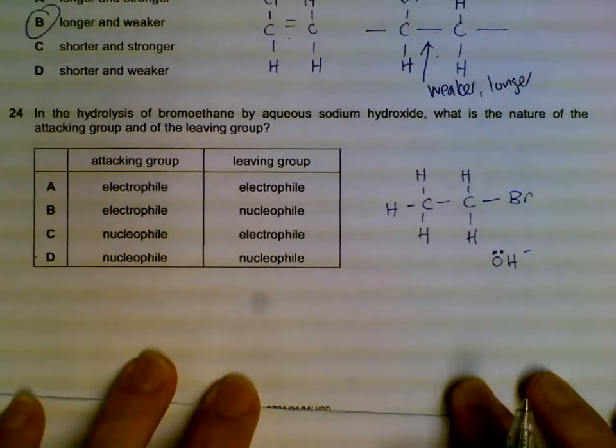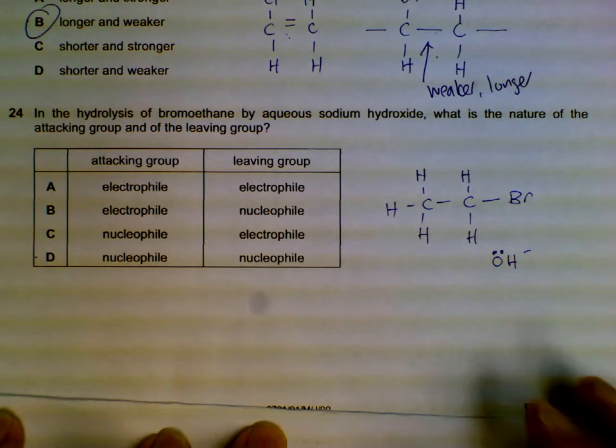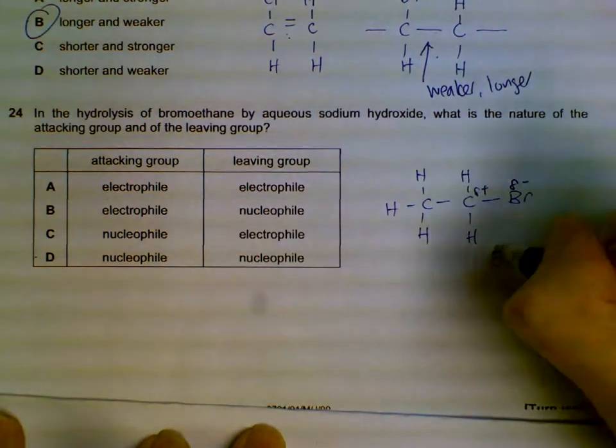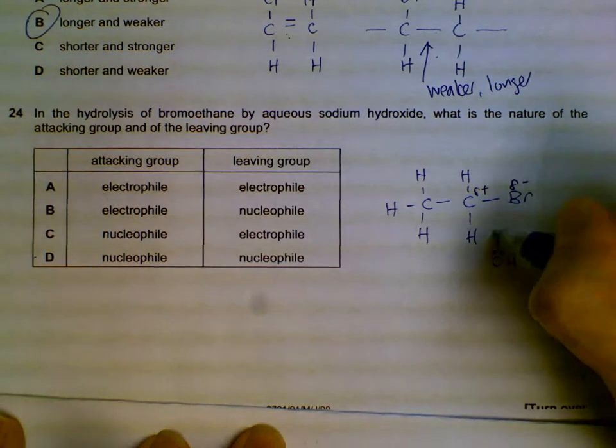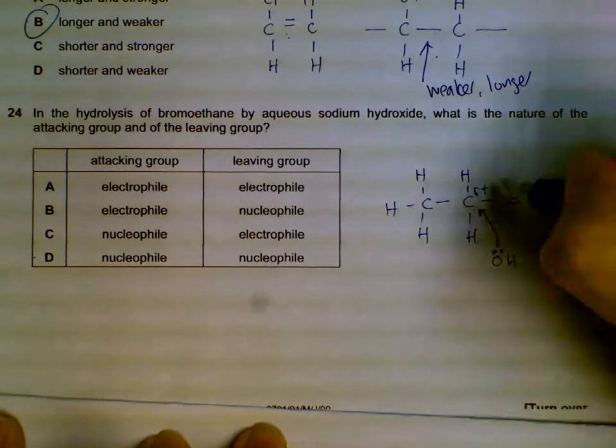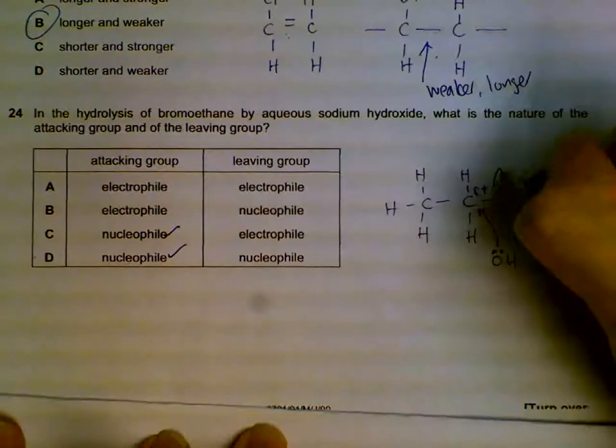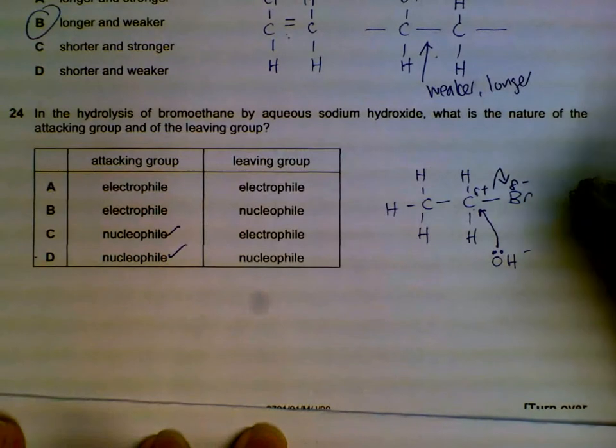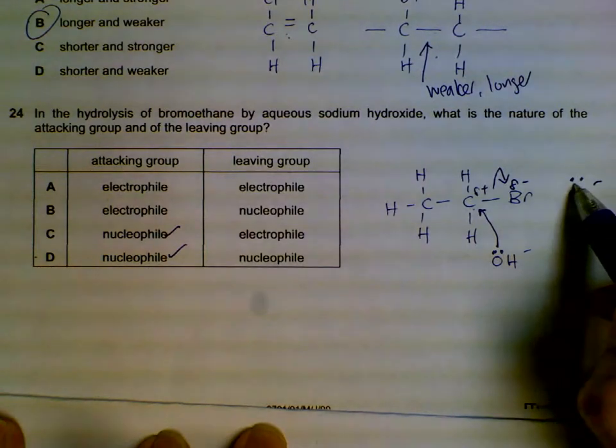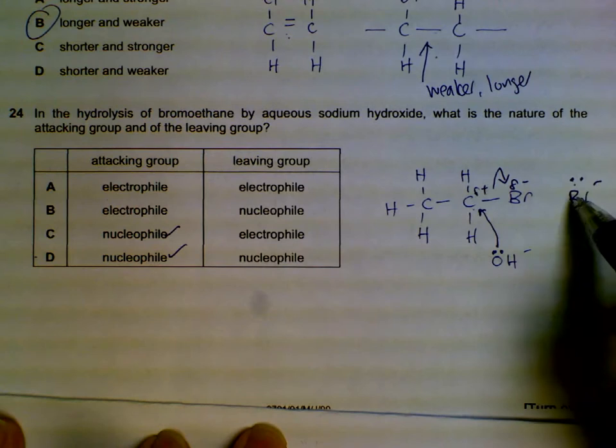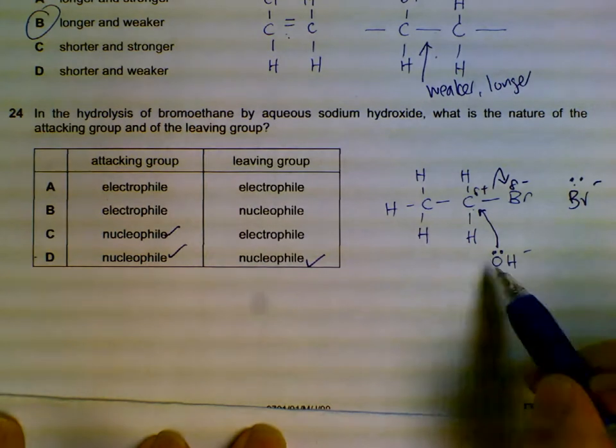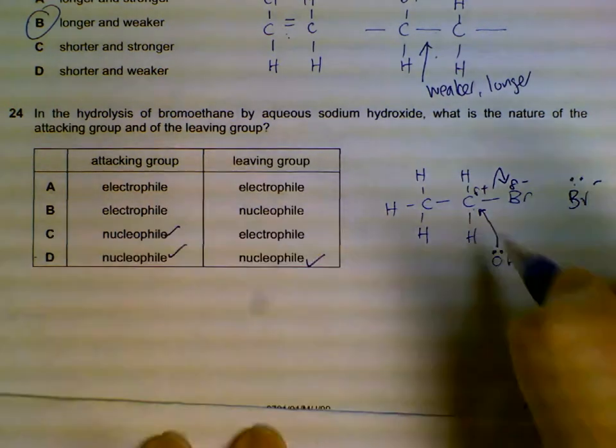Question 24: In the hydrolysis of bromoethane, what is the nature of the attacking group and leaving group? The attacking group has a lone pair - this is a nucleophile, it likes regions where they are positive. The leaving group will be Br- ion, which also has a lone pair and negative charge, so it also likes positive regions - it is also a nucleophile. OH- is just a stronger nucleophile than Br-, that's why it replaces it.